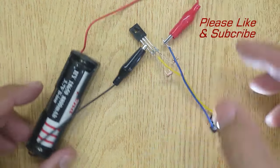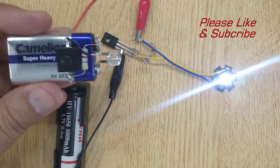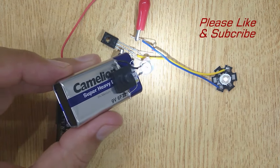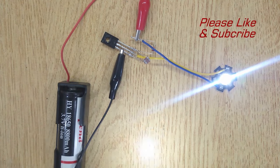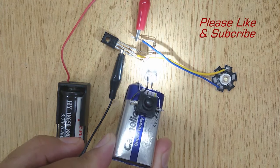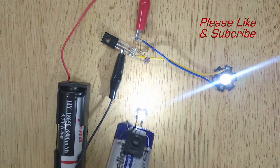Now your automatic street light system is ready. You can see when we increase the intensity of light, the LED becomes dark, and when we decrease the intensity of light, the LED glows. It means the LED will glow at night and will become dark in the morning automatically.